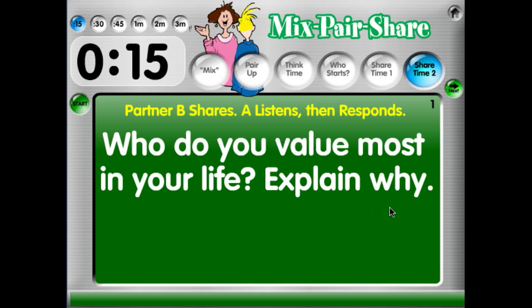Time's up. It says to respond to your partner — you can give a high five, say thank you for sharing, or any one of a number of different responses. Then in Mixed Pair Share it's the next partner's turn. This screen shows Partner B shares, and it tells you who shared last time and whose turn it is now.